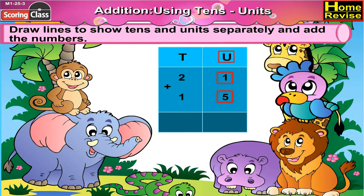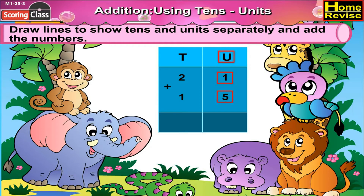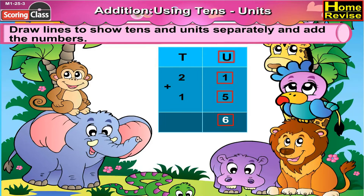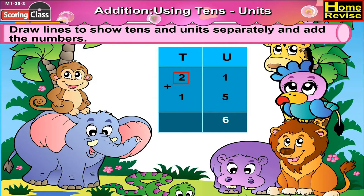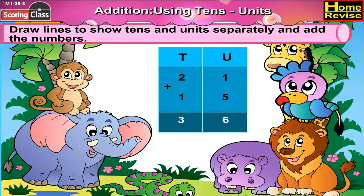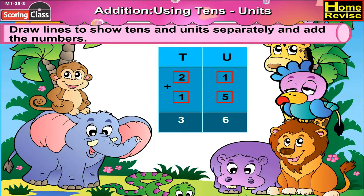1 plus 5 is 6 and 2 plus 1 would be 3. So 21 plus 15 is 36.